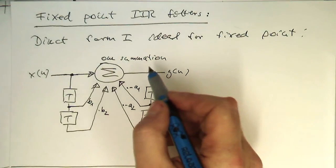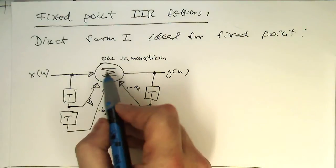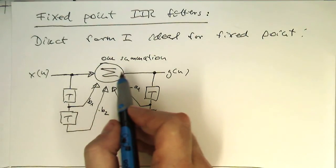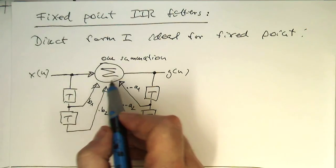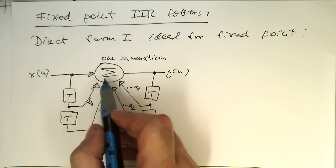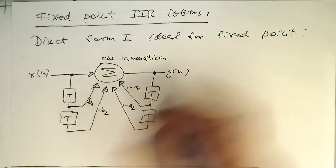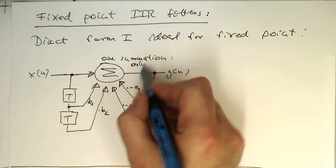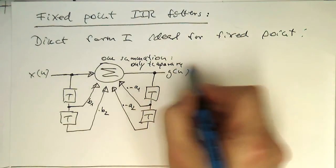So that's t and that's t and that's our output here. The reason why the direct form is so ideal for fixed point is because we're just doing the summation in one go, so we don't get overflows. We might get temporary overflows in this operation, but overall this will cancel out because of the two's complement addition here. So one summation means only temporary overflows.